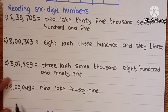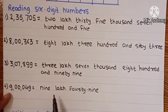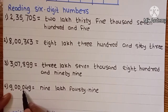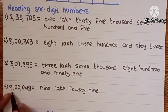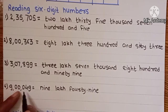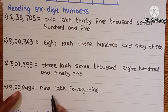4th example: 9 lakh and 49. In this example, you need to see the place values — unit, 10, 100, 1,000, 10,000, lakh. Therefore this is 9 lakh. At the 10,000 place and 1,000 place there is nothing, and at the 100 place also nothing. Therefore we can write it directly as 9,00,049.